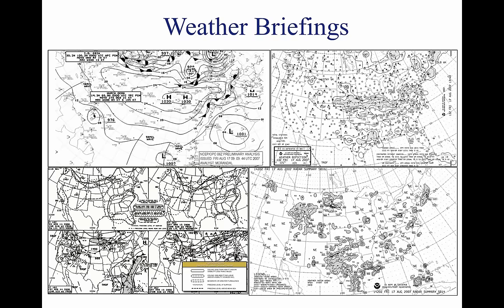A standard briefing should be obtained prior to the departure of any flight and used during flight planning. It provides the following information in sequential order if applicable to the route of flight: 1. Adverse conditions — significant weather such as thunderstorms or aircraft icing, or other important items such as airport closings. 2. VFR flight not recommended — if weather for the route is below VFR minimums or it is doubtful the flight could be made under VFR conditions, the briefer may state VFR is not recommended. It is the pilot's decision whether to continue, but this advisory should be weighed carefully.